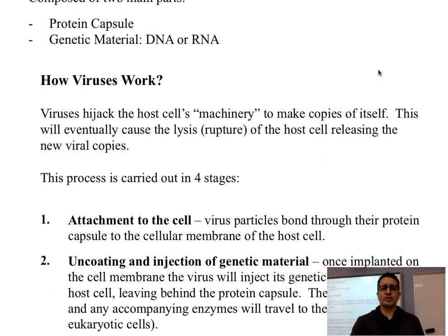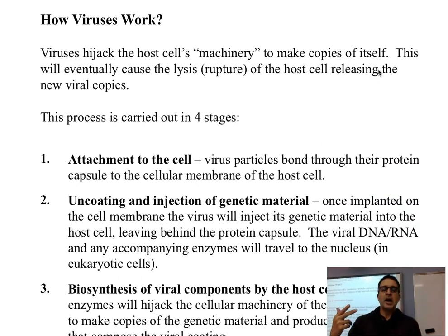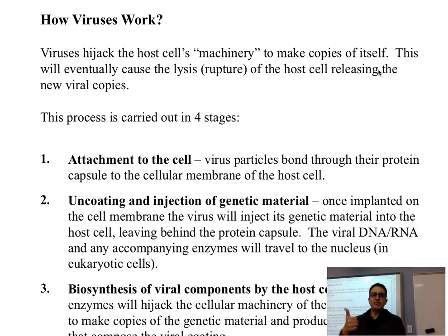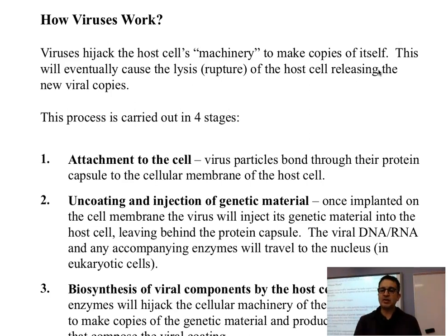How do viruses work? Basically, there are four stages of how a virus replicates itself — that's all it is interested in doing. Stage one: it must attach itself to the surface of the cell. Once attached to the surface of the cell, it can then inject its genetic material into the cell — that's stage two.